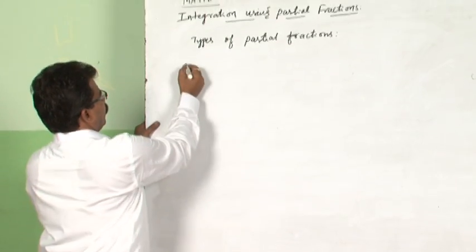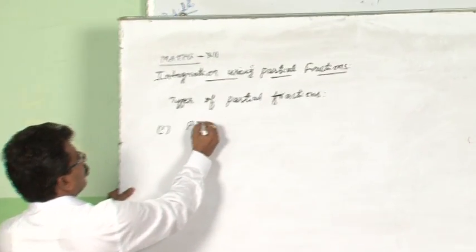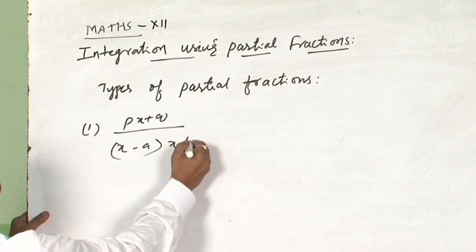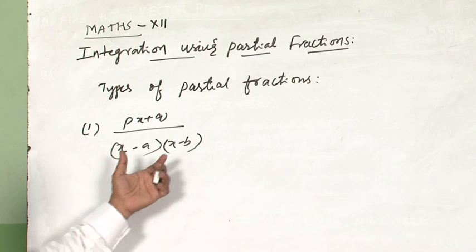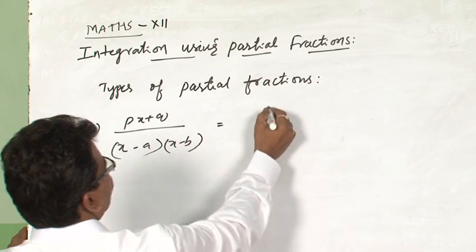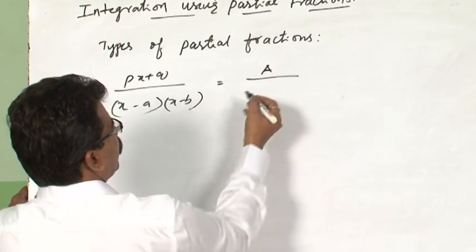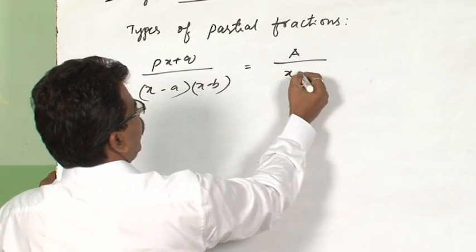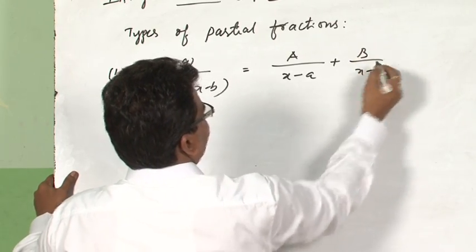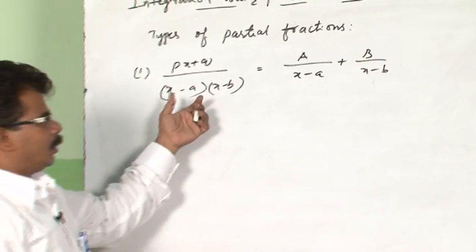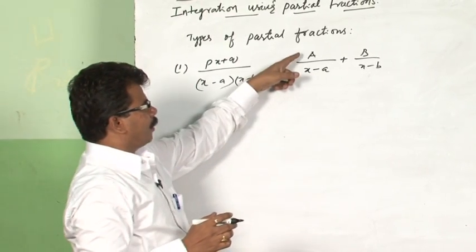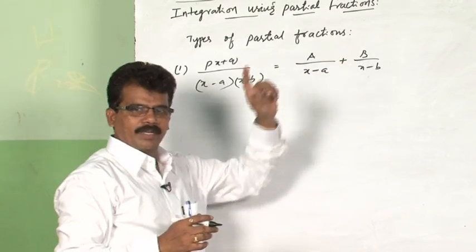Type 1: if the integrand is of the form (px + q) divided by (x − a)(x − b), meaning the denominator is a product of two linear factors, this can be written as partial fractions — a sum of simpler functions — as A/(x − a) plus B/(x − b). We have to find out the unknown quantities A and B.